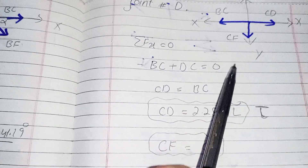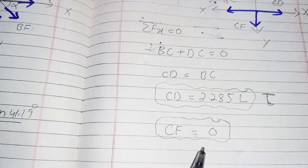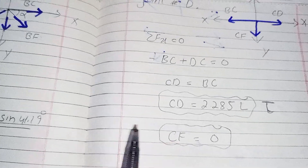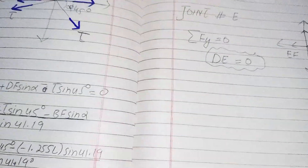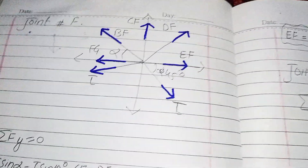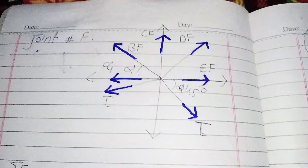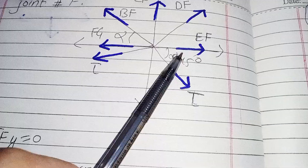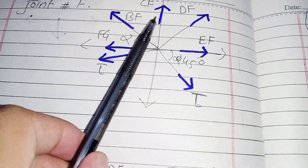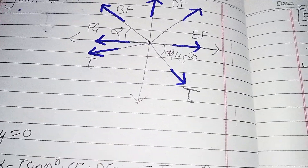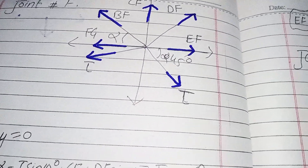There is a shortcut: when two forces act along the same line of action and a third force makes a 90-degree angle with them, that third force equals zero.